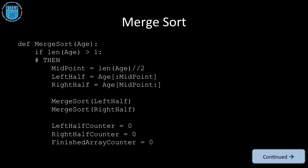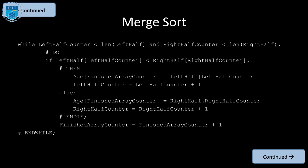We have our counters as before: left half counter, right half counter, and finished array. Then we check the value in the left half versus the right half, which value is bigger, which value is smaller, and whichever is smaller we write into the main array, and then we keep doing that.